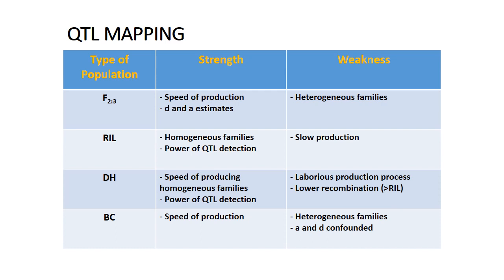Double haploid lines are considered less efficient because of fewer meiotic cycles — only one meiotic cycle is found in double haploid populations, whereas RIL is generated by repeated meiotic cycles meaning repeated recombination. F2-derived F3 strength is speed of production and easy estimation; weakness is heterogeneous population. The same is observed in backcross population. RIL has homogeneous families and power of QTL detection but slow production. Double haploid has speed of production, homozygous families and power of QTL detection; weakness is laborious production and less recombinant cycles.